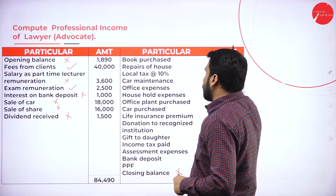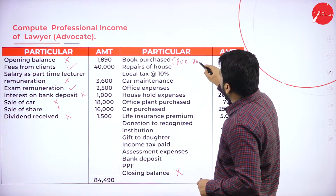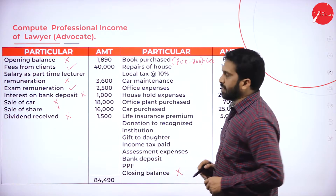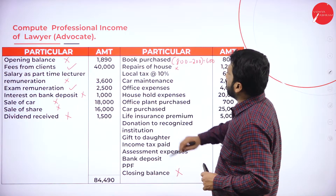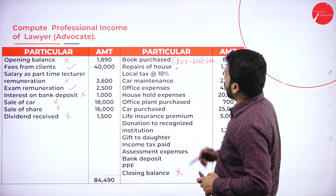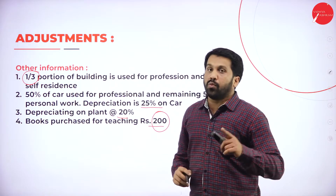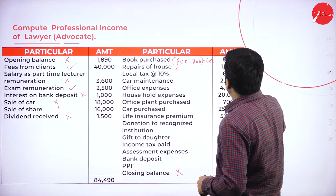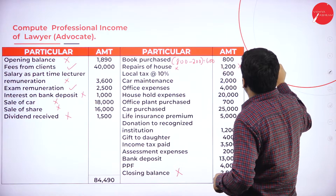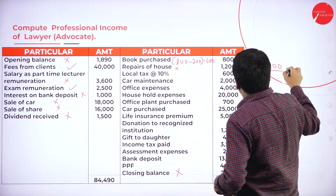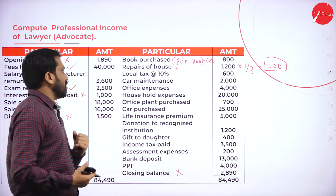Books purchased total Rs.800 minus Rs.200 for teaching purpose, so we should consider only Rs.600. Repair of house will not fully come — but one third portion of the building is used for profession, so one third we should consider. Rs.1,200 into one-third will be Rs.400. We should consider Rs.400 because one third of the house is used for profession.